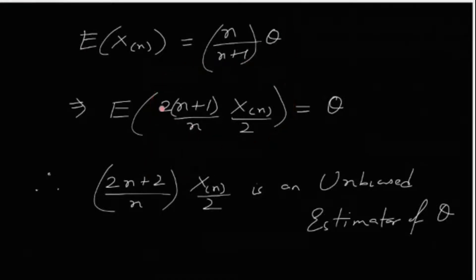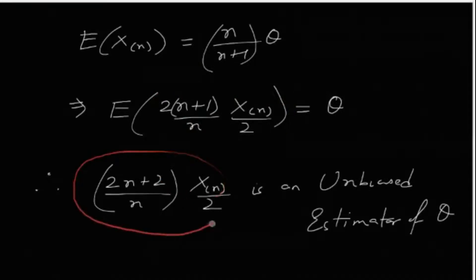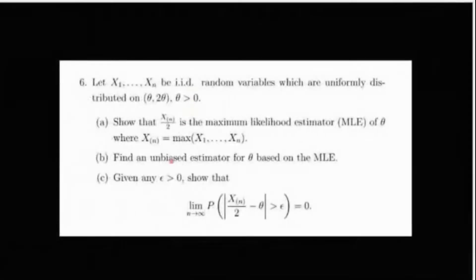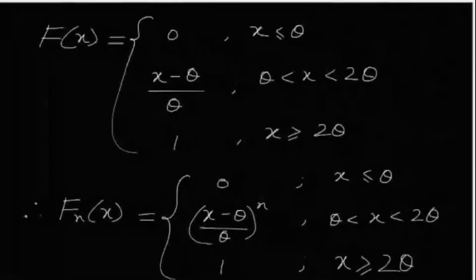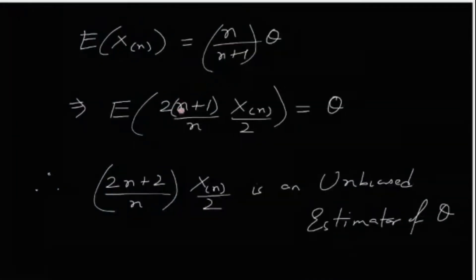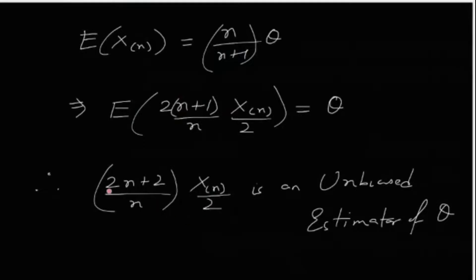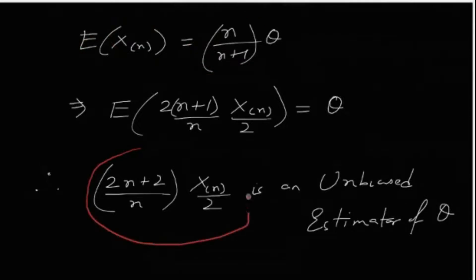Adjusting the factor, we have E[2(n+1)/n · X_(n)/2] = θ. Therefore, 2(n+1)/n · (X_(n)/2) is an unbiased estimator of θ. Since the MLE is X_(n)/2, we just computed E[X_(n)] = 2nθ/(n+1) and adjusted to obtain this unbiased estimator based on the MLE.